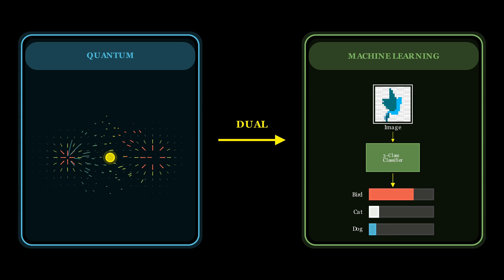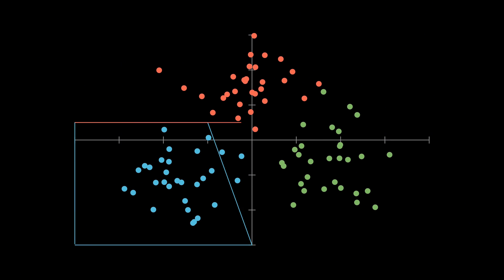Yes, you heard that right. A quantum particle and a machine learning classifier share the same mathematics. In machine learning, this model is known as multinomial logistic regression.